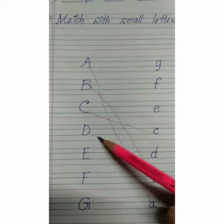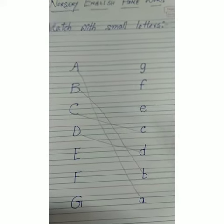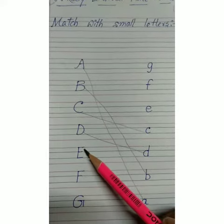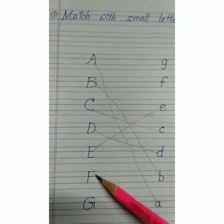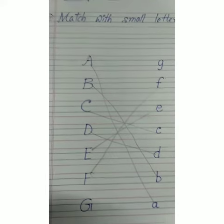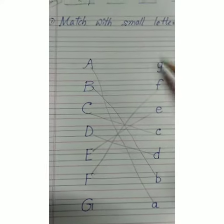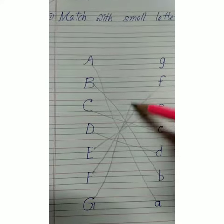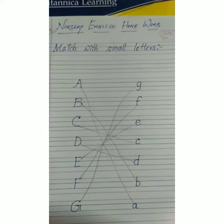This is capital letter D and this is small letter D. You have to match it like this. This is capital letter E and this is small letter E. This is capital letter F and this is small letter F. You have to match it. This is capital letter G and this is small letter G. You have to match capital with small. This is your homework. Thank you.